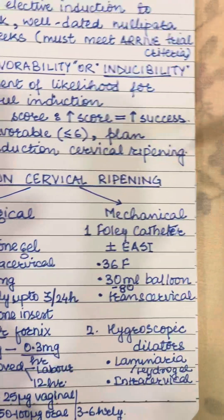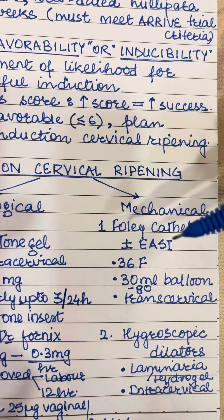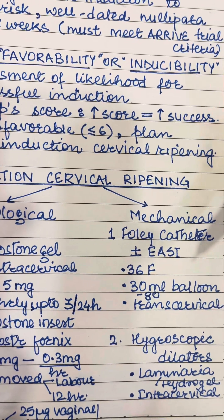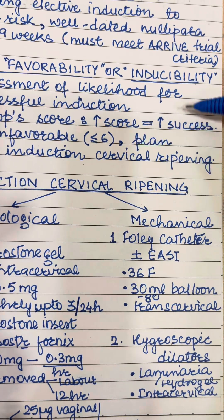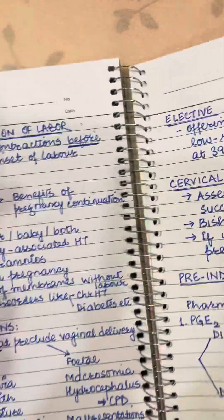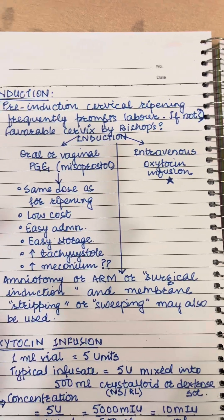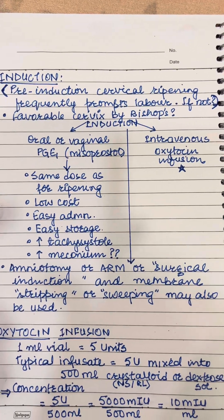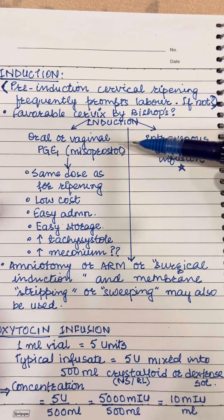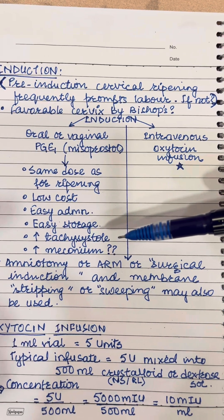Besides this, mechanical methods of pre-induction cervical ripening are Foley's catheter with or without extra-amniotic saline installation and hygroscopic dilators. If the score was good and favorable, we can proceed directly with induction of labor. After pre-induction cervical ripening, induction can be done by oral or vaginal misoprostol given in the same dosage and schedule as for cervical ripening.